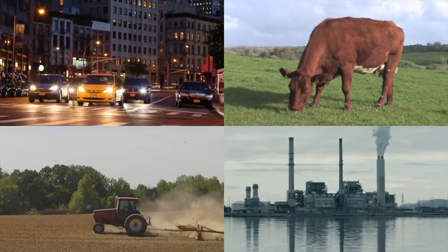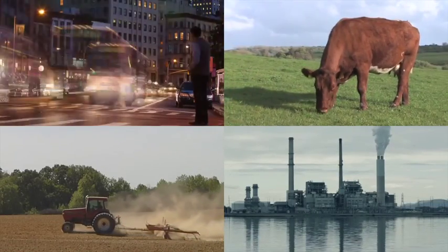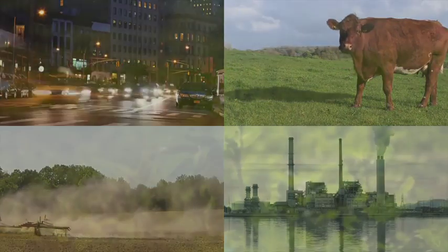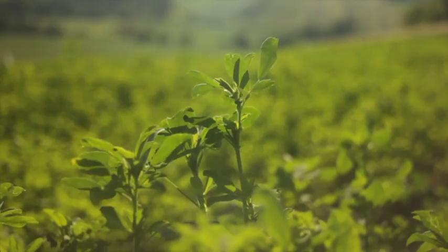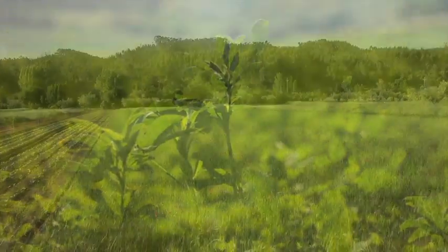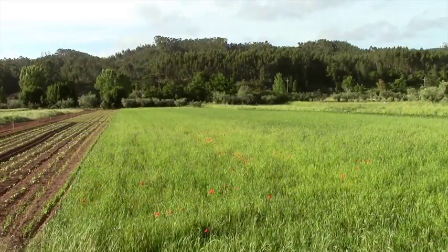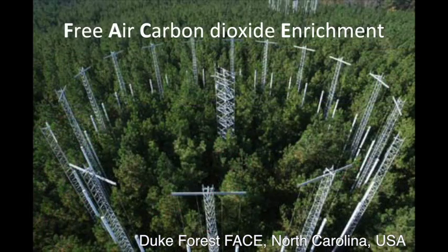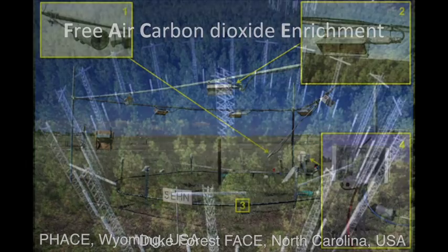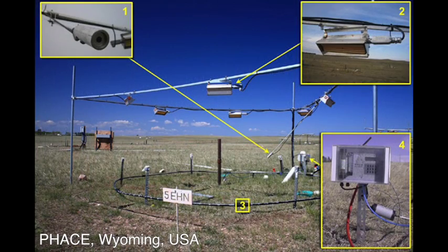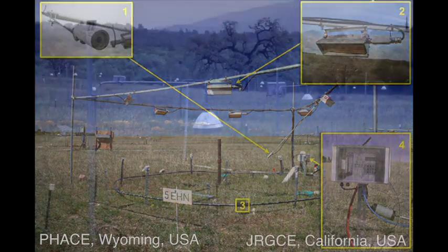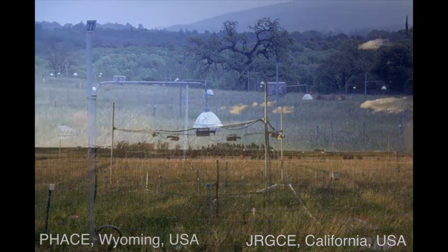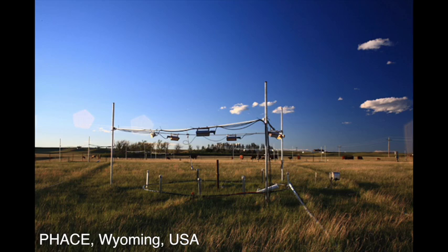The global atmospheric carbon dioxide concentration is rising as a result of human activity. This rise has major implications for plant productivity and physiology, as well as soil and ecosystem processes. FACE, or Free Air Carbon Dioxide Enrichment Systems, are an effective means to study the response of intact ecosystems and their plants, soils, and small animal components to rising atmospheric carbon dioxide concentrations.